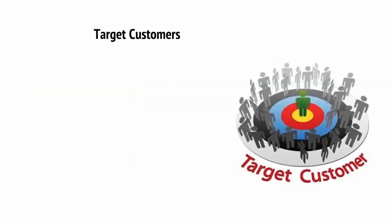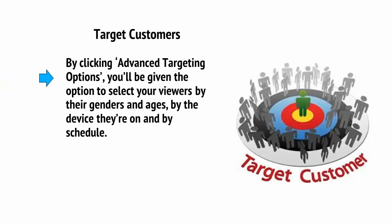Targeting allows you to specifically target the type of person you want for your ads even more. By clicking Advanced Targeting Options, you'll be given the option to select your viewers by their genders and ages — based on their Microsoft accounts — by the device that they're on (perhaps if you're selling an app you might want to target mobile devices), and by schedule.